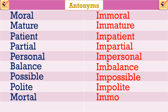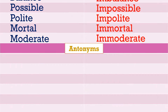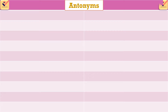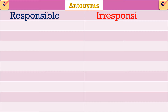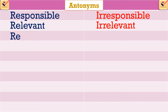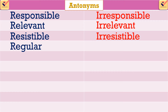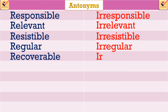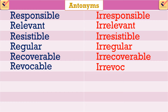More 'im' antonyms: motile – immortal, moderate – immoderate. Antonyms using prefix 'ir': responsible – irresponsible, relevant – irrelevant, resistible – irresistible, regular – irregular, recoverable – irrecoverable, revocable – irrevocable, rational – irrational.